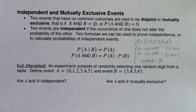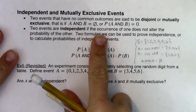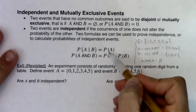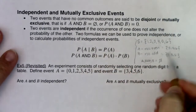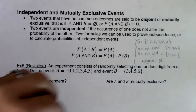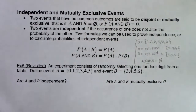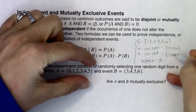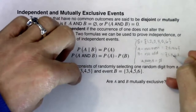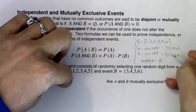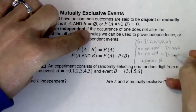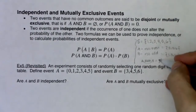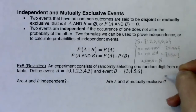Two events are independent if the occurrence of one does not alter the probability of the other. If I roll one die and then a second die: does rolling an even on the first die alter the probability of rolling an odd on the second? If I roll a 2 for my first die roll, that has no bearing — it doesn't lower or raise the probability of rolling an odd the second time. So while A and B are mutually exclusive for one die, rolling two dice makes them independent.